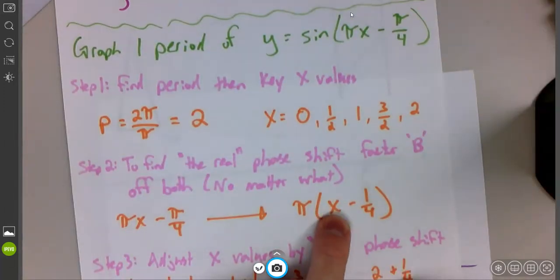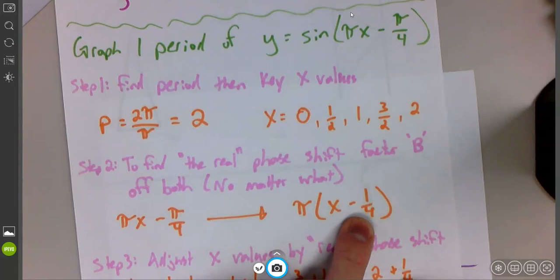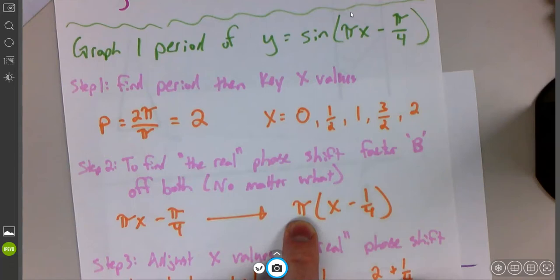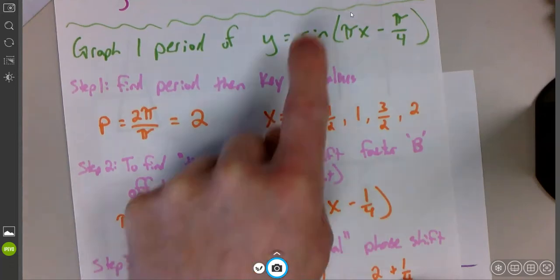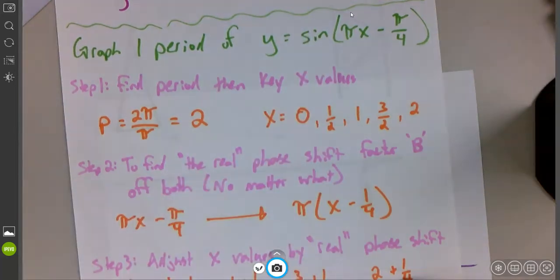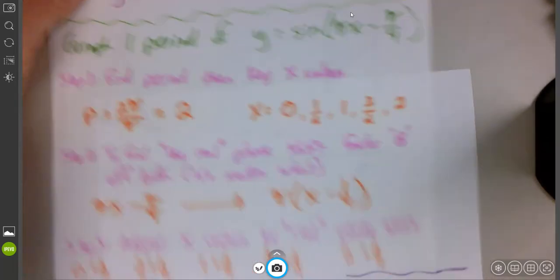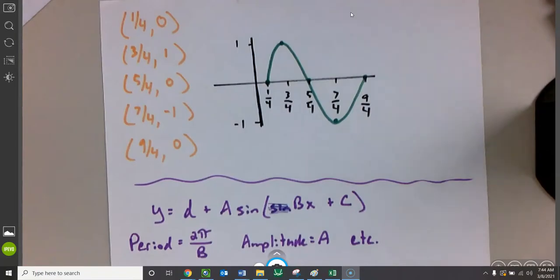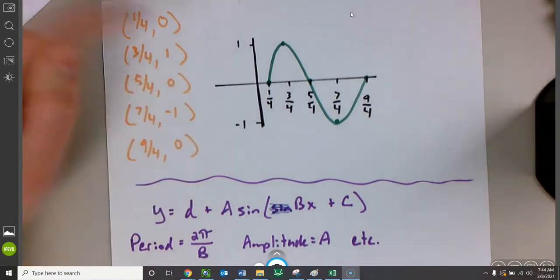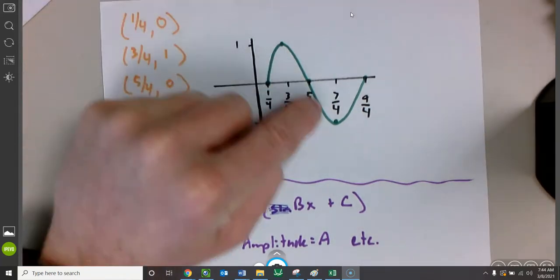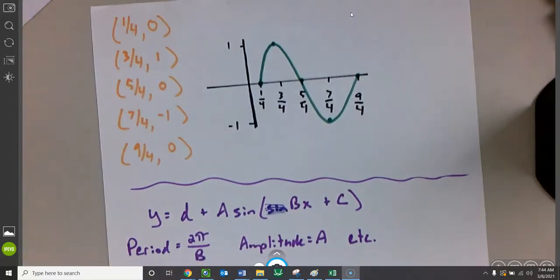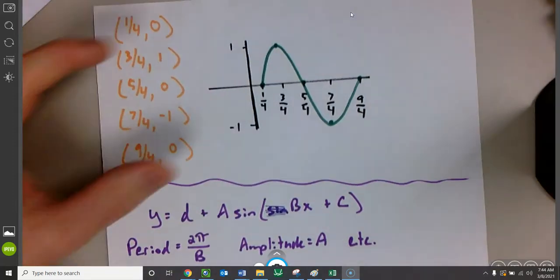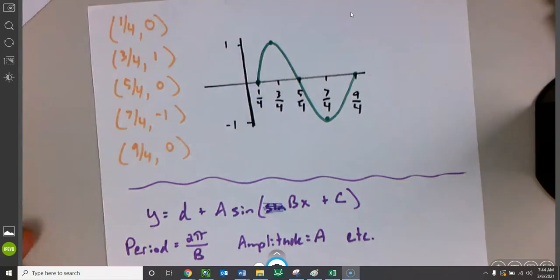We can plug in one more. Three-fourths. Three-fourths minus one-fourth is two-fourths. Two-fourths is one-half. One-half times pi is pi over two. The sine of pi over two is 90 degrees. It's one. So that's why I got three-fourths, comma, one. Finish by plugging in the rest of those values or by knowing how sine works. Sine works by doing, with a positive, a node, a maximum, a node, a minimum, a node. Just keep bouncing back and forth between whatever our a value is, in this case up to a one, down to a negative one.